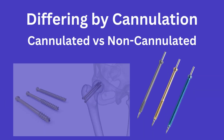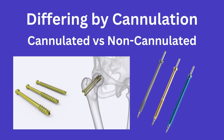Screws can also either be cannulated or non-cannulated. Cannulation will allow for the screw to be placed over a guide wire. Cannulated screws will have self-drilling and self-tapping tips and are preferred when accurate placement is crucial, like when placing a screw near an articular surface, as you can see here.